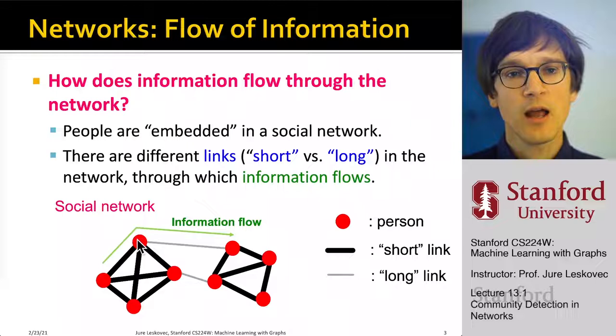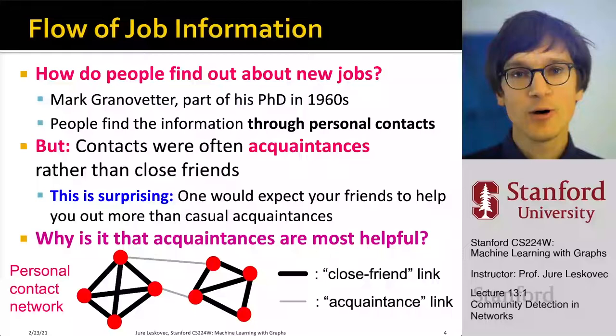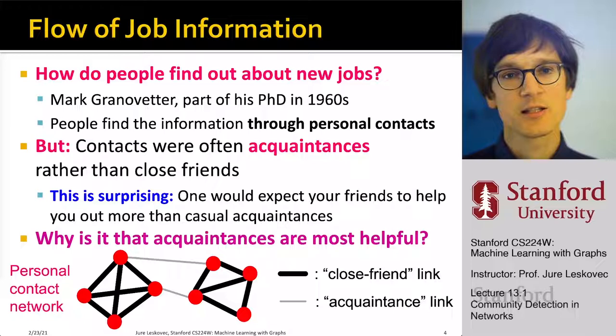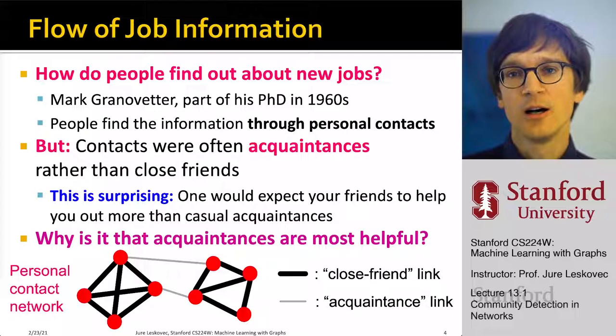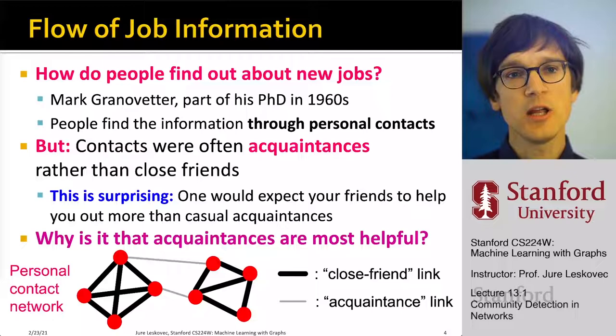We have these short, strong links and weak, long links to other parts of the network. There was seminal work back in the 1960s by Mark Granovetter, a sociologist at Stanford University. This is arguably the most cited and most impactful social science paper ever, stemming from his PhD research about how people find information through personal contacts.